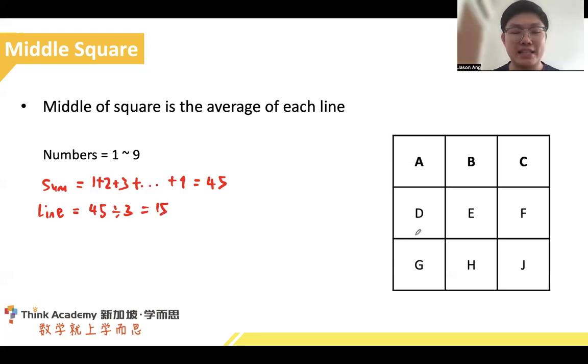Since all three lines, ADG, BEH, and CFJ, will all add up to the same number anyway, it is considered as the average. But again, that's average for each line, not the center number. Yet, we still have another proof that we can go with.